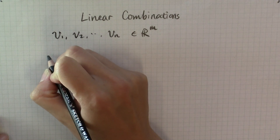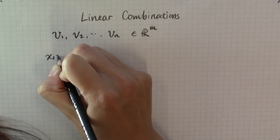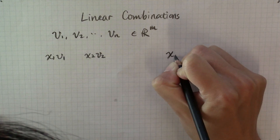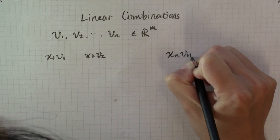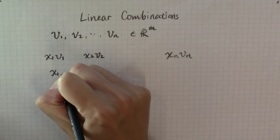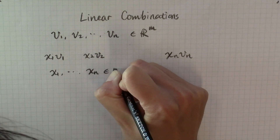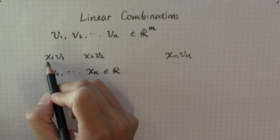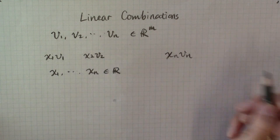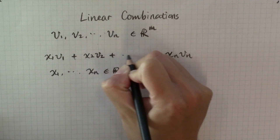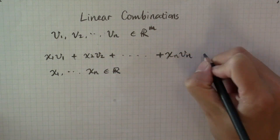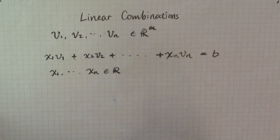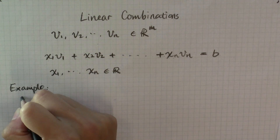We multiply each vector by a number: x1 multiplied to v1, x2 multiplied to v2, etc., xn multiplied to vn. These numbers x1 to xn are all real numbers. These are scalar multiplications of these vectors, and if we add all these scalar multiplications together, that forms a linear combination of the vectors v1 to vn.